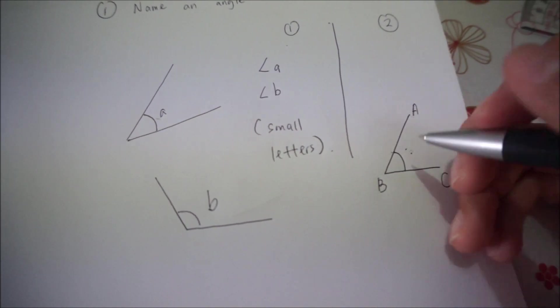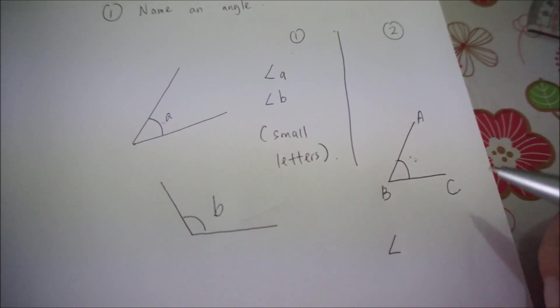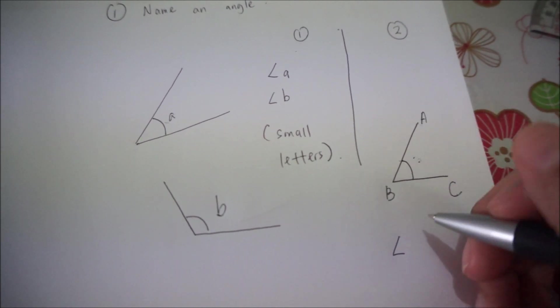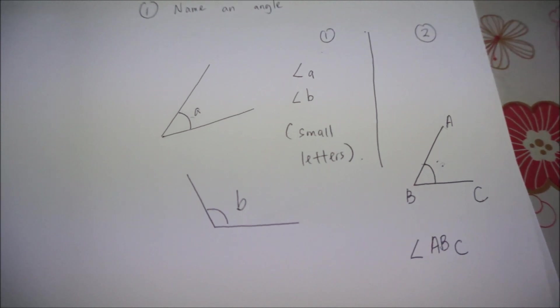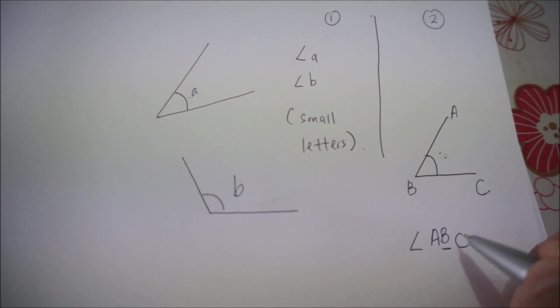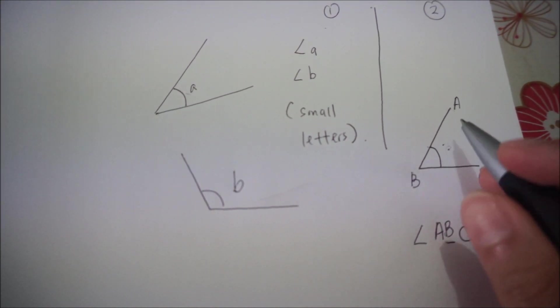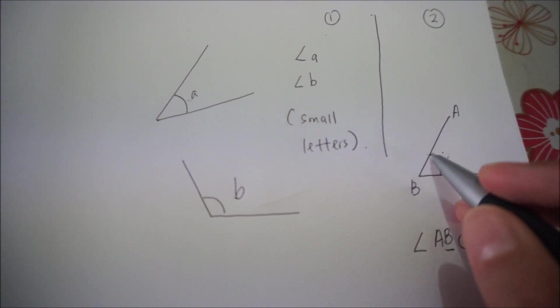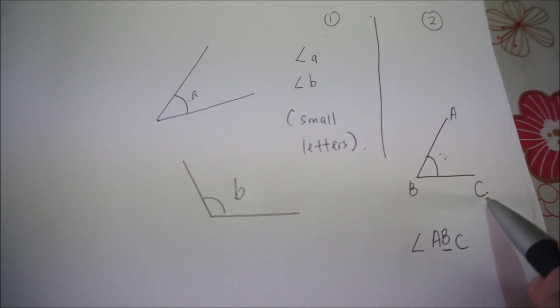So how do I name this angle here? This angle is called angle A, B, C. You notice that the letter B is in the center where the angle is, and the alphabets beside it are basically the one where the line comes from. A, B, C. B must be in the center because B is where the angle is.